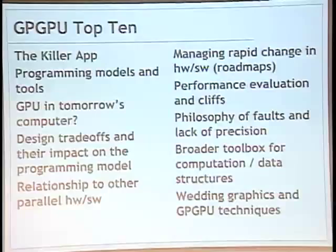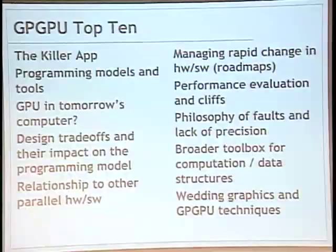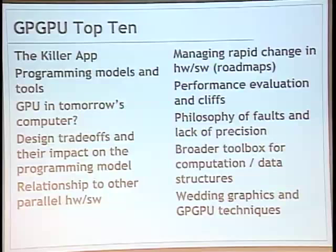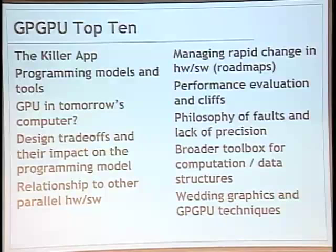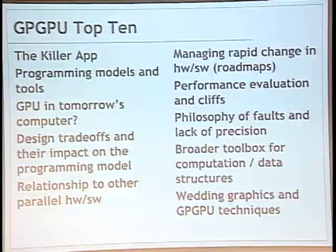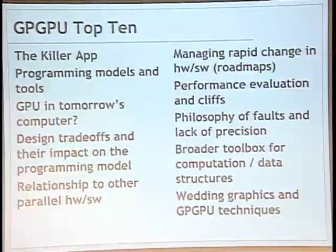Problem five: rapid change. CPUs don't change a lot from generation to generation — we already know what Nahalem (Core i7) is going to look like. Nobody knows what the next GPU is going to be, when it's coming out, or what it's going to do. You write all this code and the next year it's obsolete. That disruption every year or two is good for vendors but really hard for programmers whose code gets obsoleted.